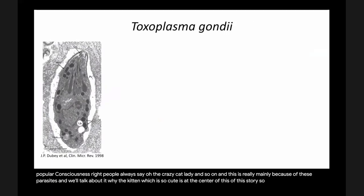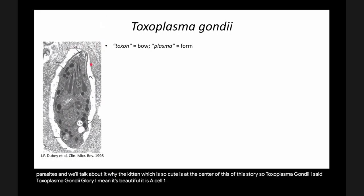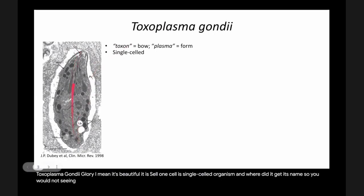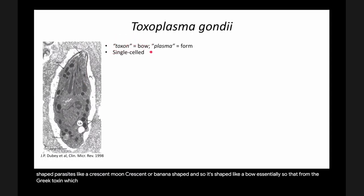Toxoplasma gondii — this is the parasite in all of its glory. It is beautiful. It is a single-celled organism. In electron micrographs, we see that the parasite is really like a banana-shaped or crescent-shaped parasite. It's shaped like a bow essentially. From the Greek 'toxon,' which means bow, and then 'form' — so form like a bow — you get the 'plasma.'